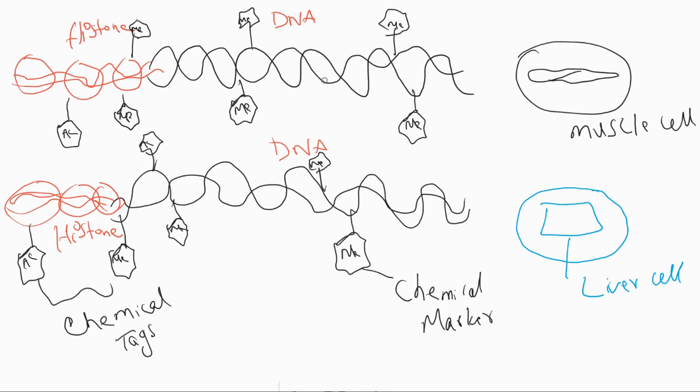For example, the genes that are required by muscle cells are turned on, and the genes which are required by liver cells are turned off. Similar is the case with the liver cell. The genes which are required by muscle cells are turned off, and the genes which are required by liver cells are turned on.